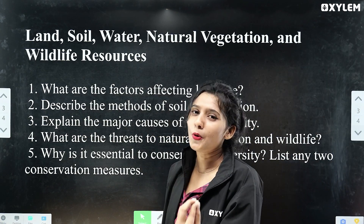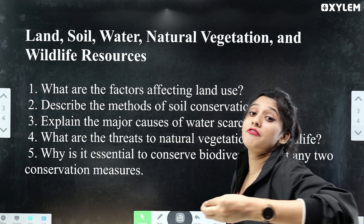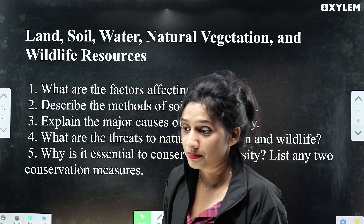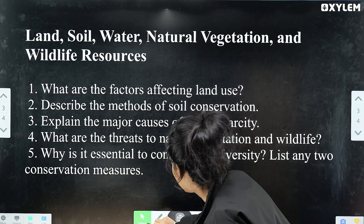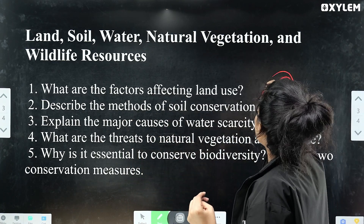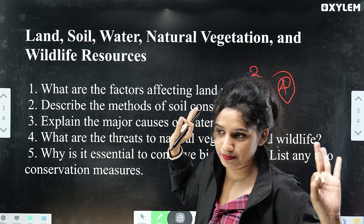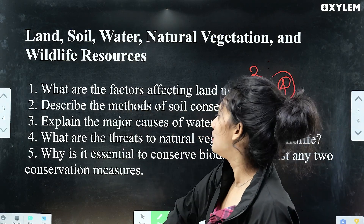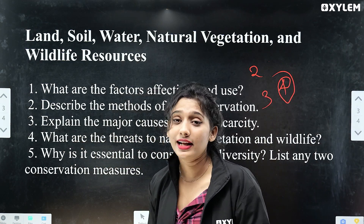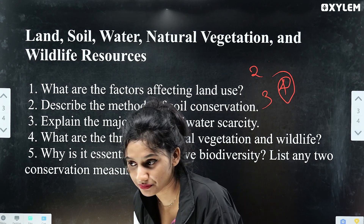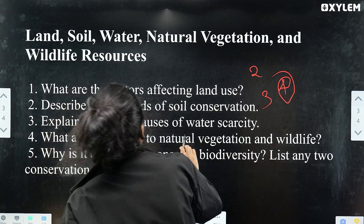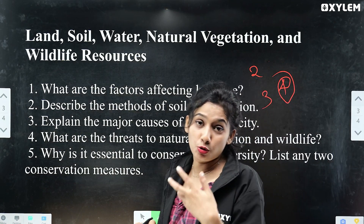The second question: describe the methods of soil conservation. Soil is a natural resource, and we have to keep that in mind. For three marks, write three points; for four marks, write four points; and for two marks, write two points. Next question: explain the major causes of water scarcity. Water scarcity is a major issue — what are its major causes? Fourth question: what are the threats to natural vegetation and wildlife? What are the issues facing wildlife and natural vegetation?